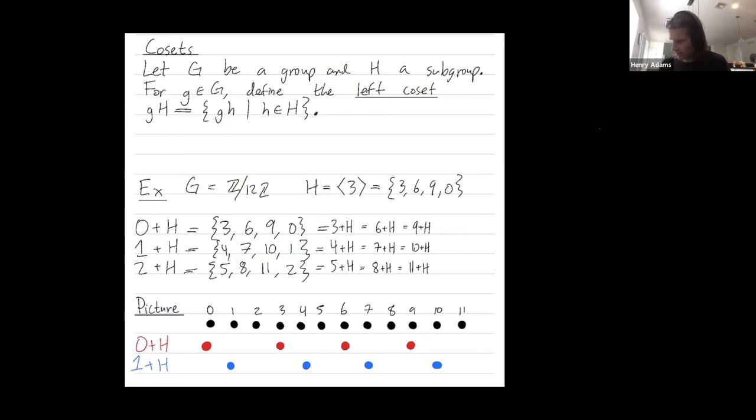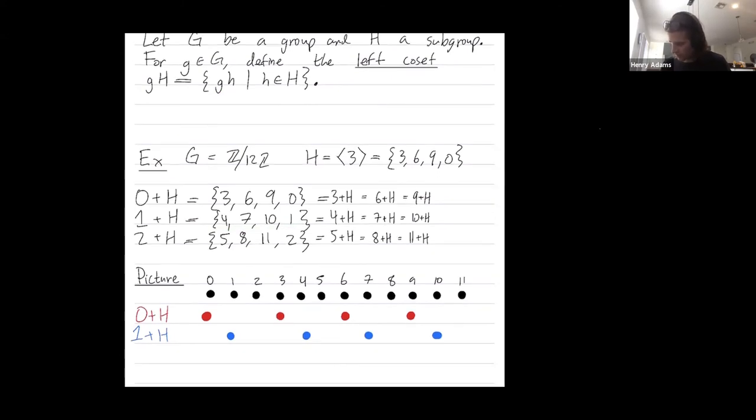And finally, let's write down the coset 2 plus H. It contains the elements 2, 5, 8, and 11.